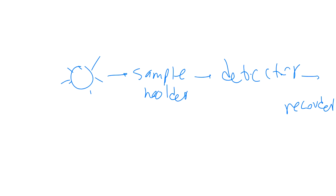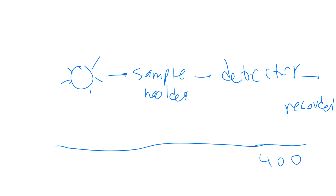For IR, the energy provided is low energy and the light used is within the IR region, from 400 to 4000 per centimeter — that's the wave number scale used for IR.